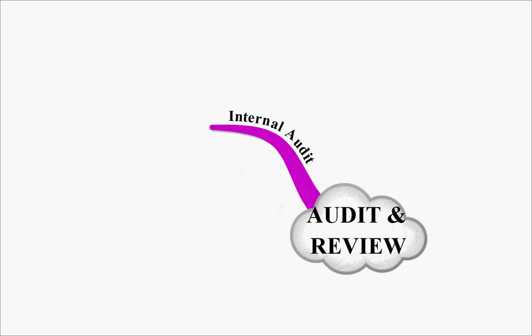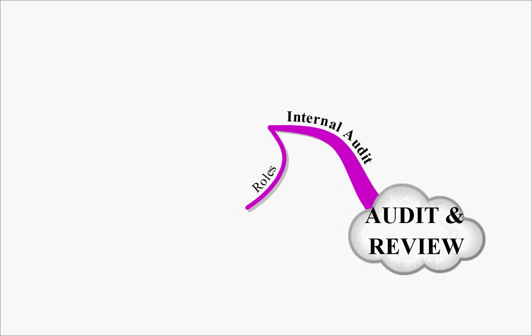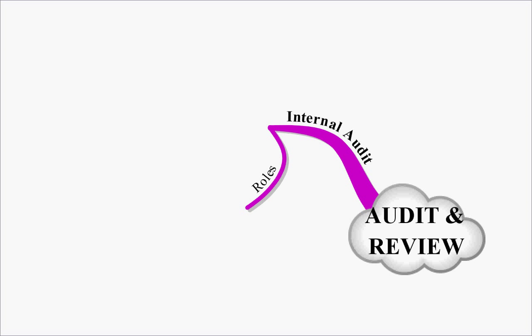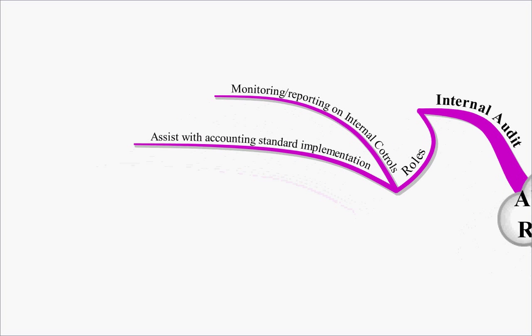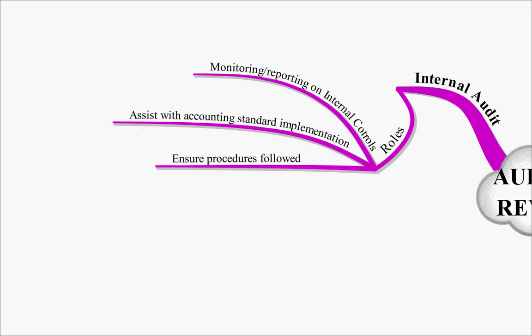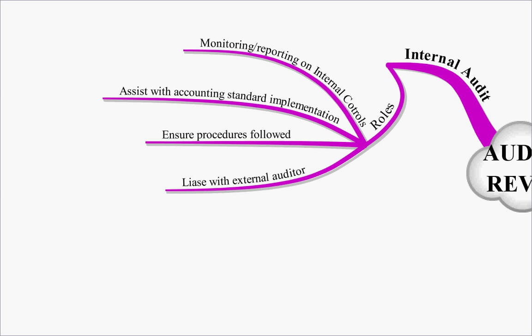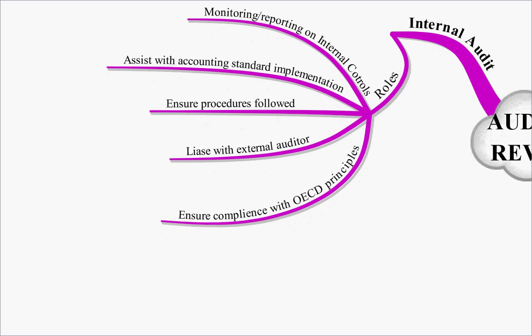First thing we wanted to look at was internal audit. So what are the roles of internal audit? Well, they monitor and report on internal controls. They assist with our accounting standard implementation. They ensure that our procedures are followed. And they liaise with the external auditor. Now they also ensure compliance with the OECD principles. And we look at what those are later on when we look at corporate governance. But those are the roles of internal audit. The things that they are responsible for.